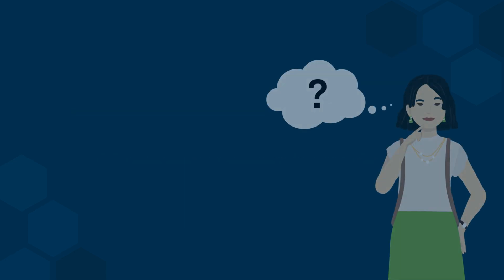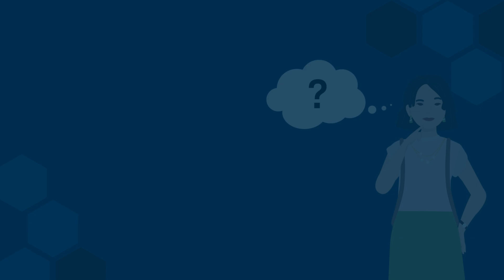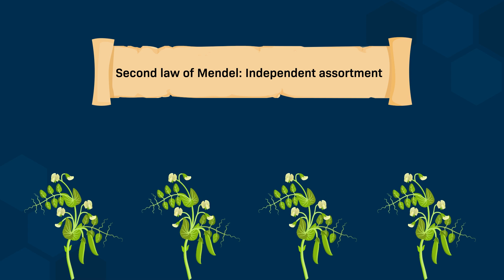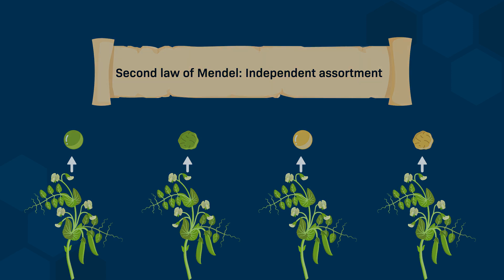Now the question is: what happens if we study more than one trait? Do these traits sort independently of each other? To address this question, Mendel set up an experiment to study the assortment of two traits. He once again used pea plants, looking at the shape of the peas (either smooth or wrinkled) and the color of the peas (either green or yellow). Here the color is represented by either an uppercase or lowercase Y, and the shape of the pea is represented by an uppercase or lowercase R.